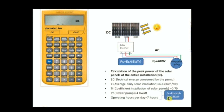Multiplied by the operation hours per day, which is 7 hours. So the electrical energy equals 28 kilowatt-hours, as you can see here. We can now use this value in the equation of the peak power.